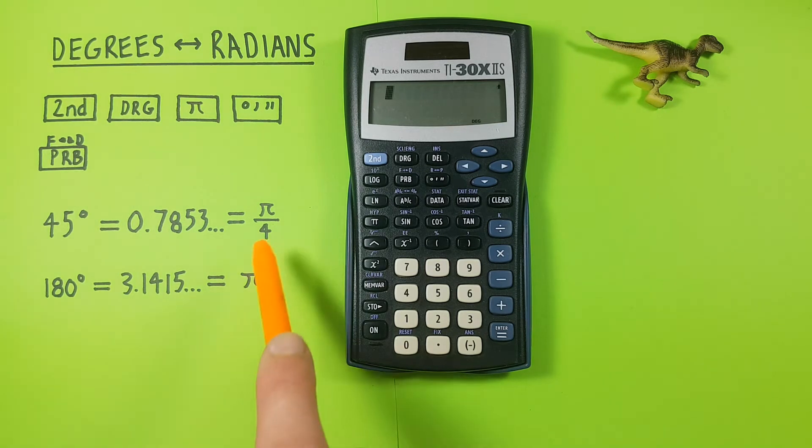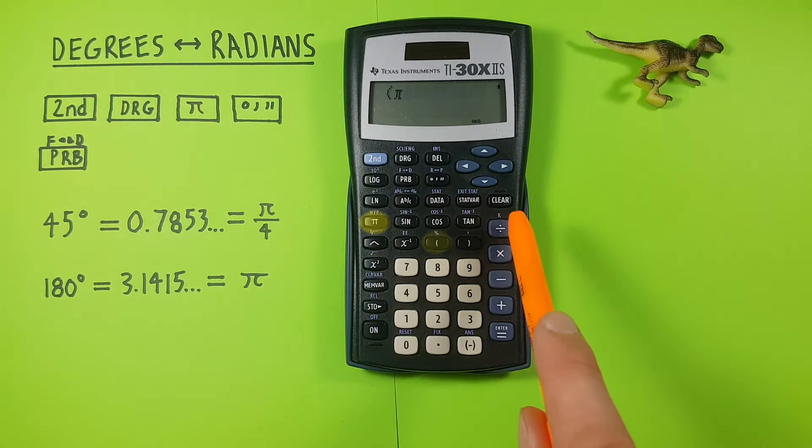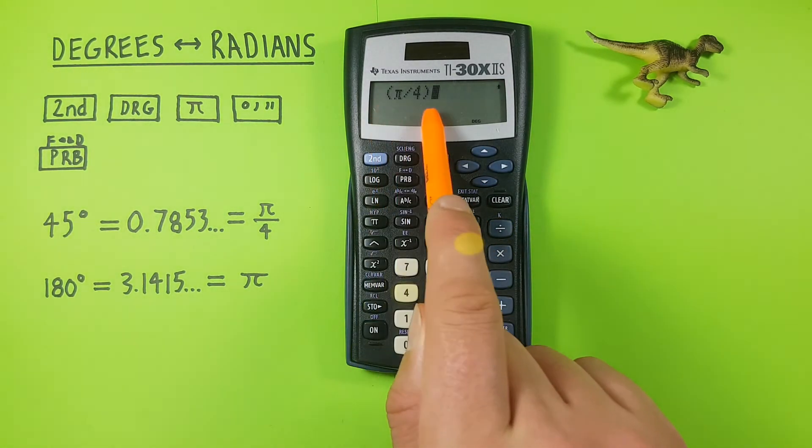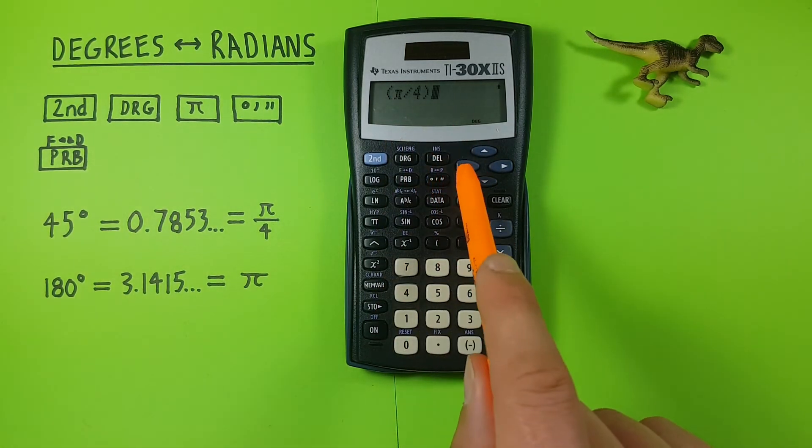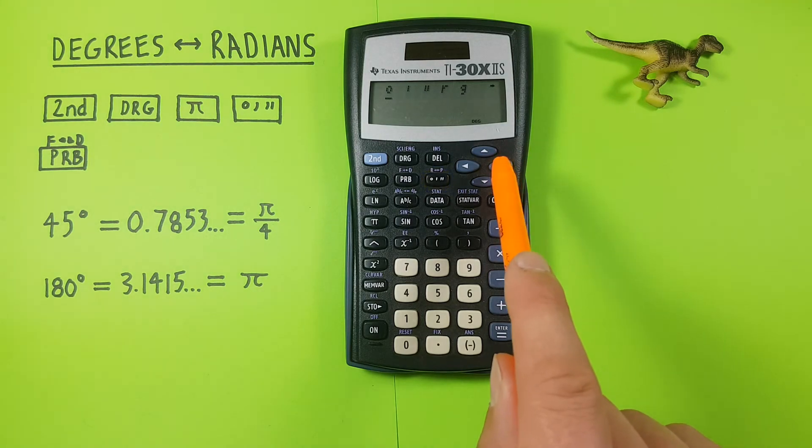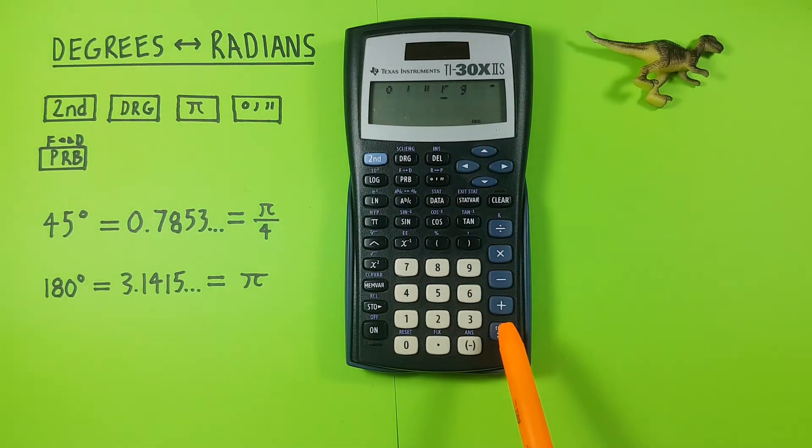Now we can do our pi over 4, and for this kind of example I like to use brackets, so we'll go bracket pi divided by 4 and close our bracket there we go. Now we need to tell our calculator this is a radian, so we do the degree key and then scroll all the way over to this R here which is for radians, press enter.